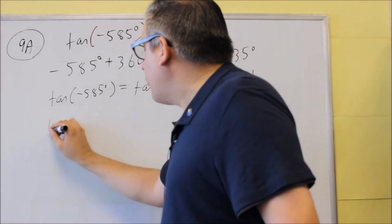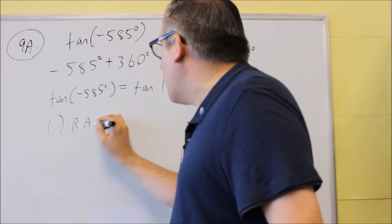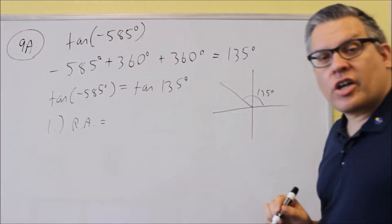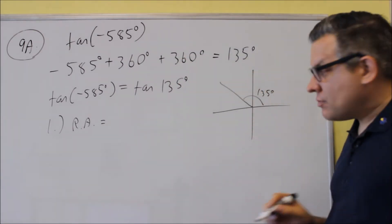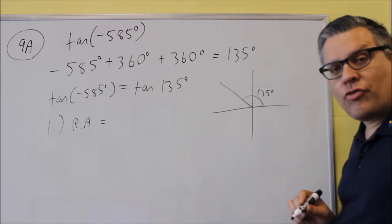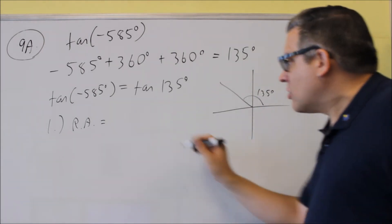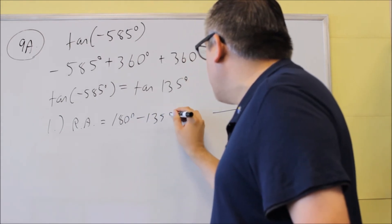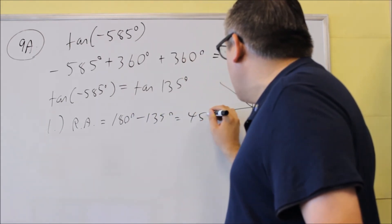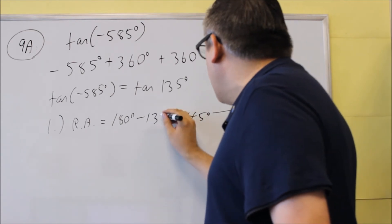First thing you want to do when you find a value is you want to find the reference angle. Reference angle is in the second quadrant. So in the second quadrant, the formula for it is 180 minus theta. We're going to do 180 minus 135, and we'll get 45 degrees as a result there.